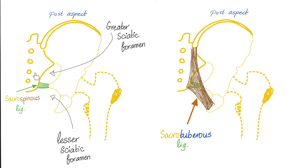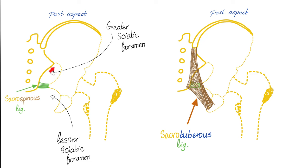Looking at the hip bone from the back — this is the back of the hip bone, this is the back of the sacrum. There is a wonderful ligament here called the sacrospinous ligament. It extends from the sacrum — specifically the lateral aspect of the last piece of the sacrum and the first piece of the coccyx — to the ischial spine. This sacrospinous ligament divides this opening into two openings: the greater sciatic foramen above and the lesser sciatic foramen below.